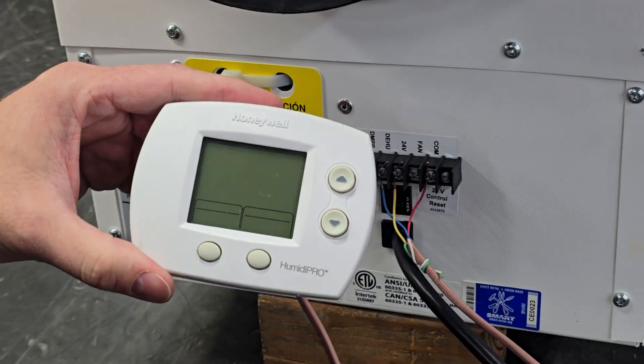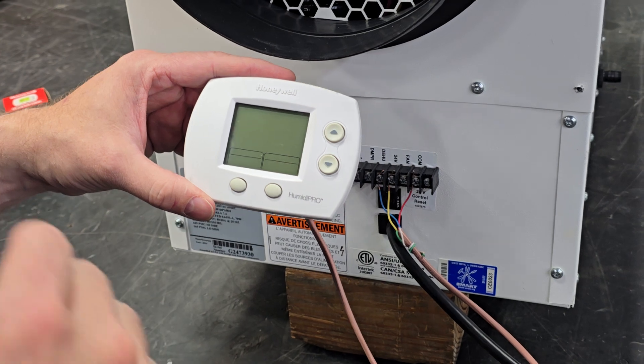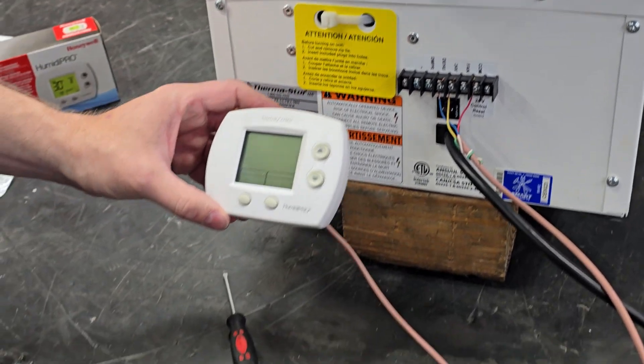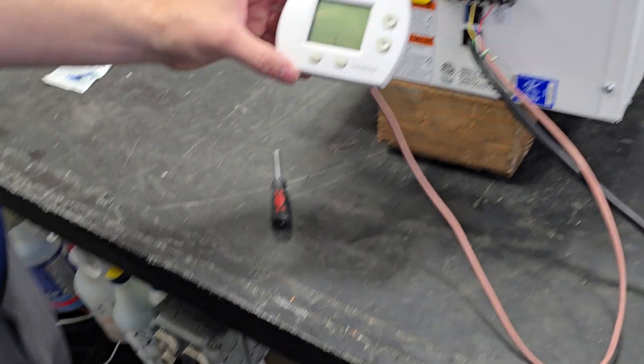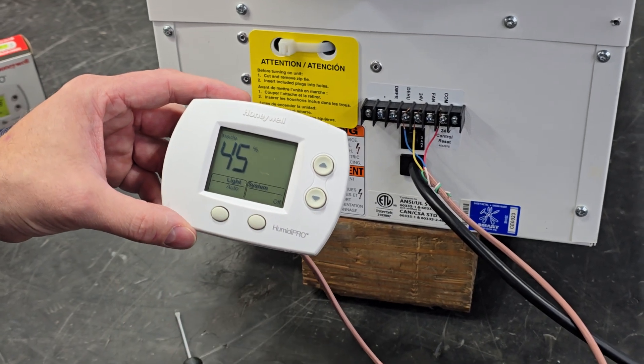Now you must program the control. The Humidipro is actually a humidistat, not a dehumidistat, so you have to reprogram it to be a dehumidistat. The next step would be to plug the unit in. That'll activate the control.